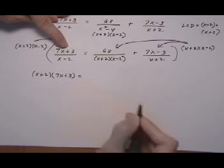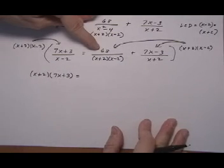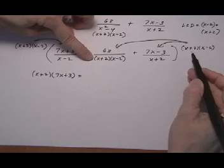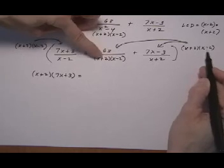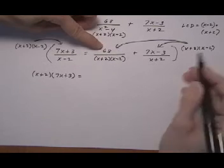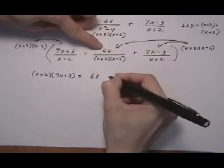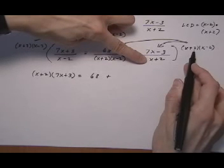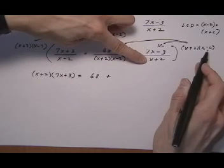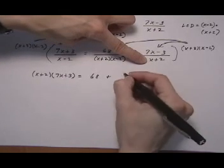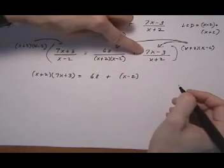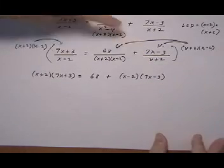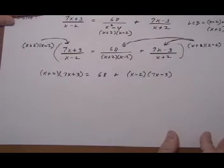7x plus 3 equals, on the 68 over x plus 2 times x minus 2, well, x plus 2 and x minus 2 both cancel out. They're gone. So we're left with the 68. And then the next one, x plus 2 and x plus 2 both cancel out. So we write down the leftover one. x minus 2 did not cancel out. And the numerator also did not cancel out. 7x take away 3. So that's what we're left with there.